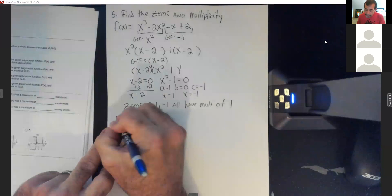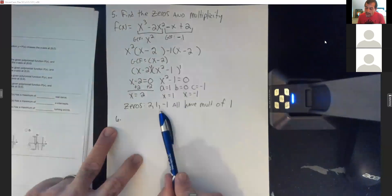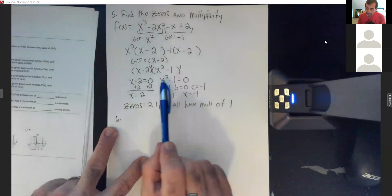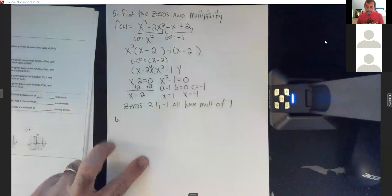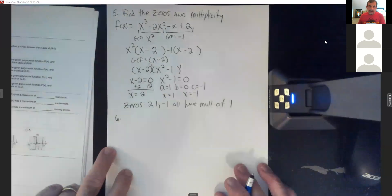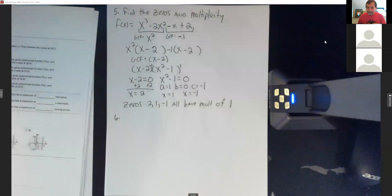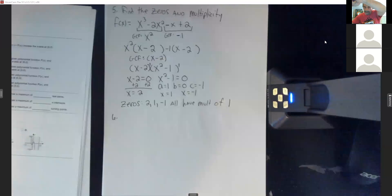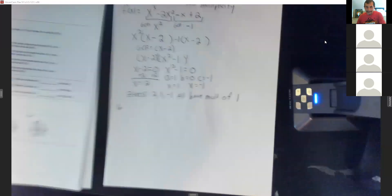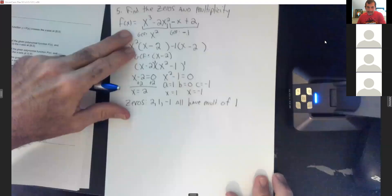A student asks to confirm: the zeros are 1 and negative 1 from the quadratic formula? The instructor confirms and offers to write larger. The student mentions they're going to the doctor today and can't see well. The instructor notes you can zoom in.